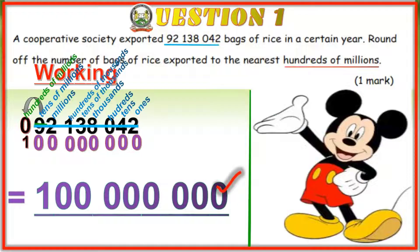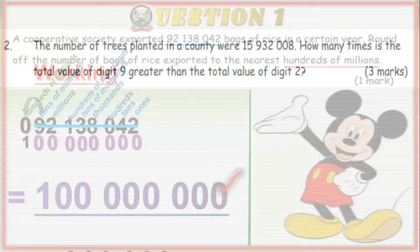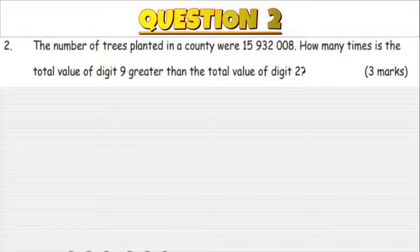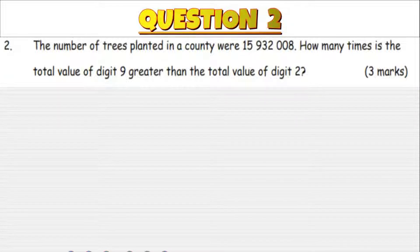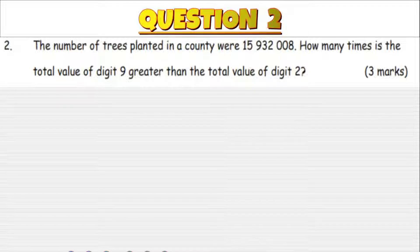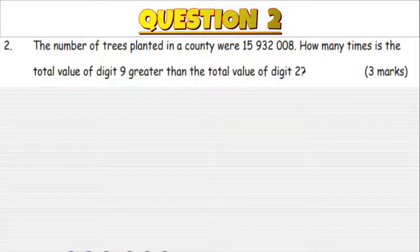Question two: the number of trees planted in a county is 15,902,008. How many times is the total value of digit 9 greater than the total value of digit 2?